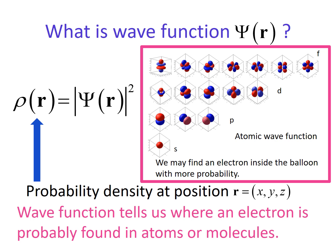So if we know the wave function, then it tells us where an electron is probably found in atoms or molecules. This is the atomic wave functions indicating s orbital, p orbitals, d orbitals, and f orbitals. This means that we may find an electron inside the balloon, red or blue whichever, with more probability.